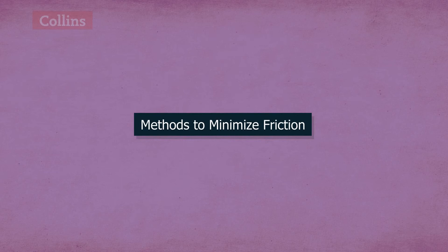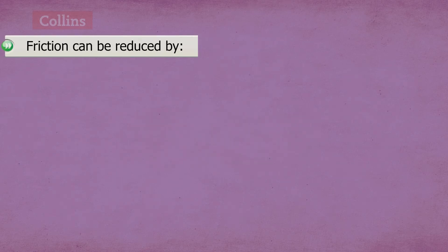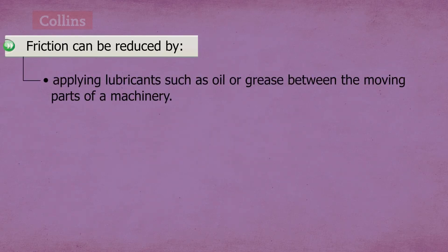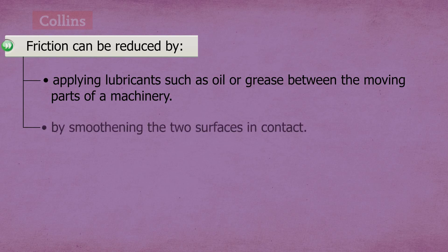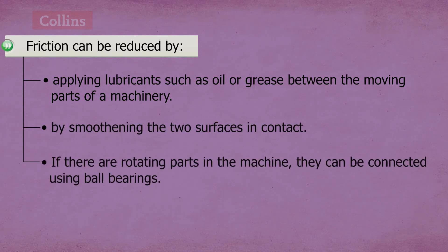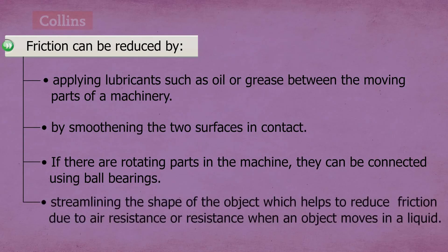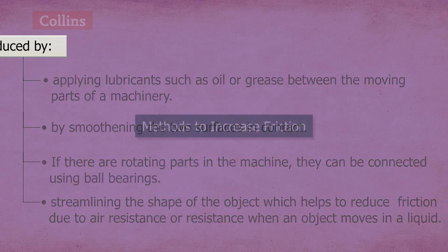Friction cannot be eliminated. However, it can be minimized. Friction can be reduced by applying lubricants such as oil or grease between the moving parts of a machinery, by smoothening the two surfaces in contact, by connecting rotating parts using ball bearings, and by streamlining the shape of the object, which helps to reduce friction due to air resistance or resistance when an object moves in a liquid.